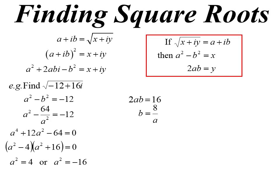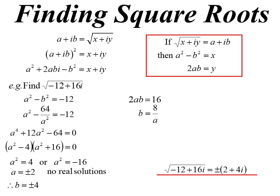Only one of those is valid — a and b represent the real and imaginary parts, which are always real numbers. So a squared equals negative 16 is no good; it must be a squared equals 4. Therefore a equals plus or minus 2, and b equals plus or minus 4. When a is positive 2, b is positive 4; when a is negative 2, b is negative 4. So the answer is plus or minus 2 plus 4i.